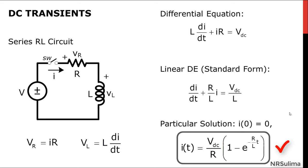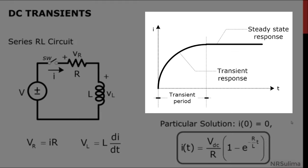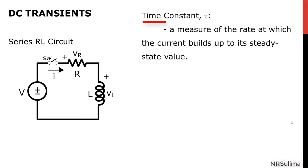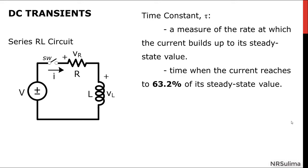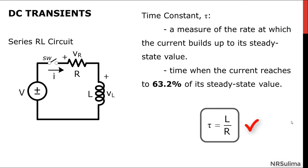Now, from this equation, as the value of time increases, the behavior of the current is generally represented by this graph. Another important parameter in transient analysis is what we call the time constant. It is a measure of the rate at which the current builds up to its steady state value — that is, when the current reaches 63.2% of its steady state value — and it is given by the formula L over R.